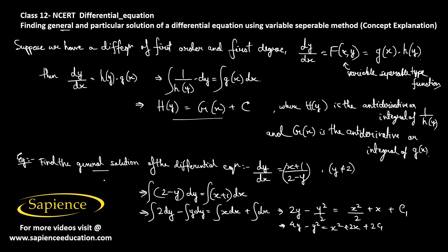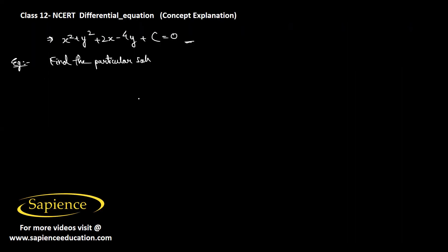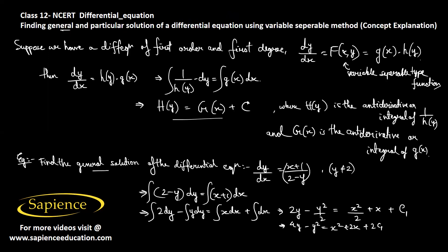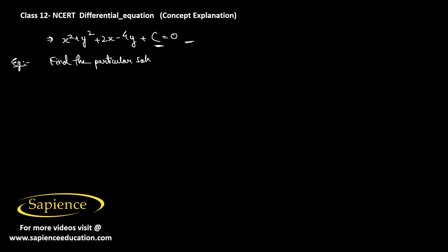Since the order of the differential equation is one, there should be only one arbitrary constant in the general solution, which we confirmed. Now we need to find the particular solution of the differential equation dy/dx equals −4xy², given that y equals 1 when x equals 0.